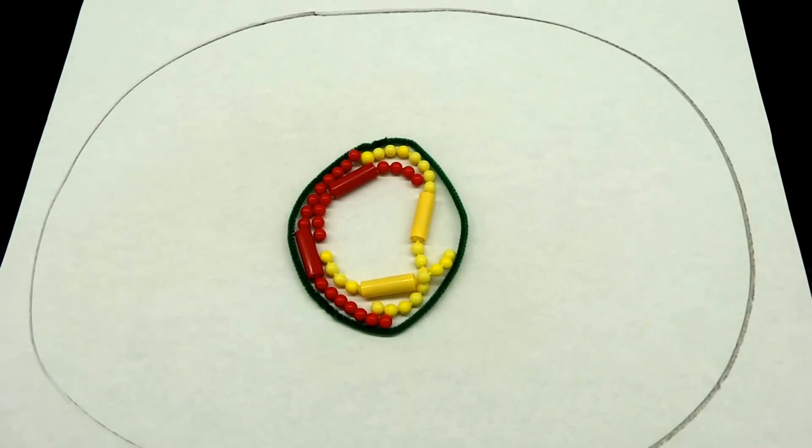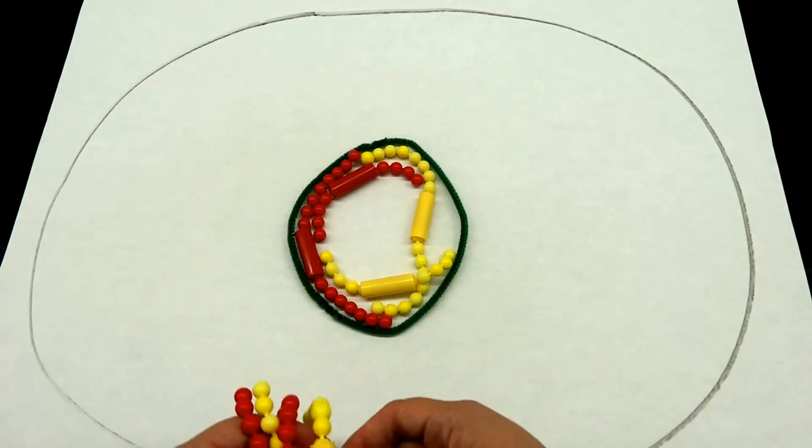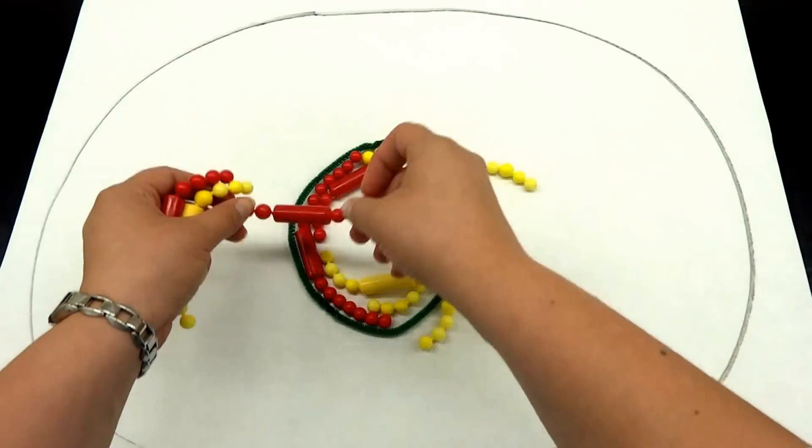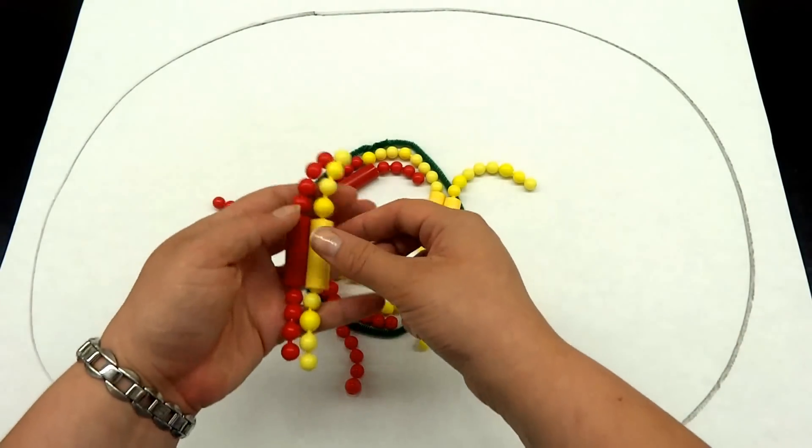Now before meiosis can even start, interphase is going on, so we have to have DNA synthesis. To synthesize our DNA we're just going to add in another one of these duplicated chromosomes while it's still inside the nucleus. Our nucleus has not yet disappeared.